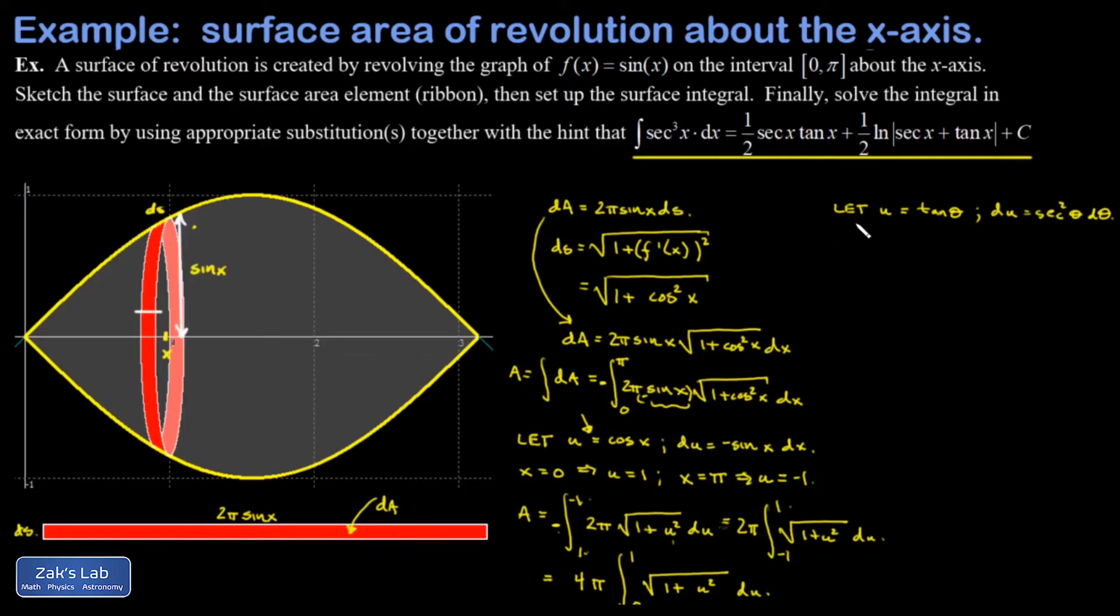So when u is 0, I look up here at my substitution. When u is 0, I have tangent theta equals 0. Well, that happens at theta equals 0. And when u is 1, I have 1 equals tangent theta. That happens at theta equals pi over 4.